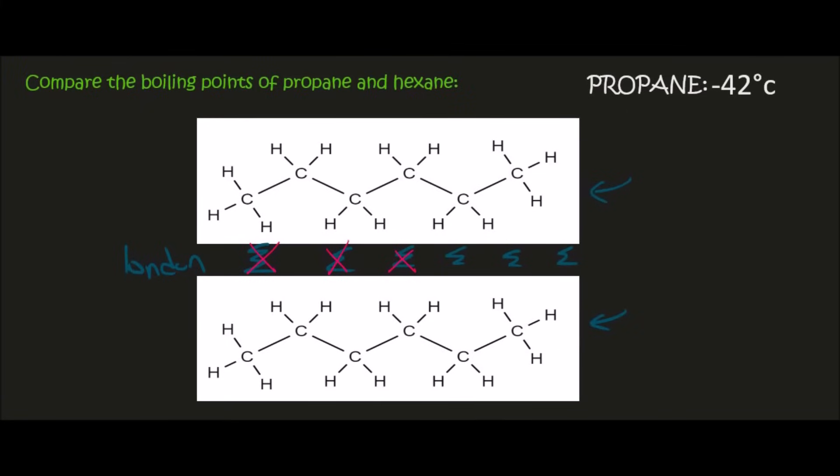And if you had to go Google hexane, you would see that its boiling point is 68 degrees Celsius. So that's quite a significant jump. It's about almost 100 degrees different. So propane, negative 42, hexane, 68.